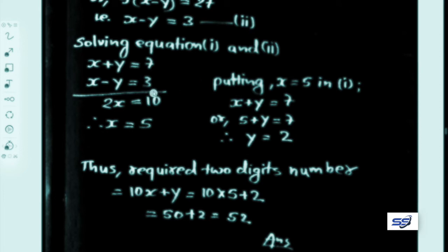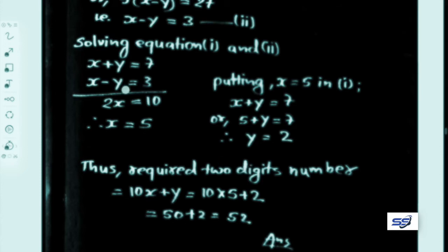Therefore our required two-digit number is 10x plus y equals 10 into 5 plus 2 equals 52.